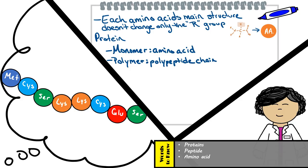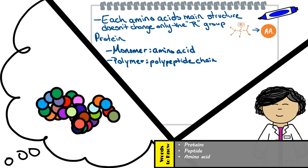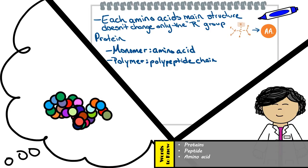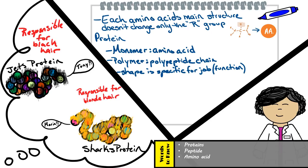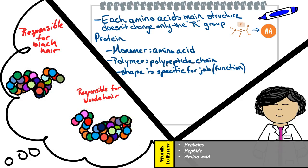How about we get back to how these long chains of amino acids make different proteins? That sequence of amino acids in the chain would make a specific protein that has a unique shape specific for it to do its job, also known as a function. For instance, this amino acid sequence could be for a protein specific for giving you your black hair. You just need to understand that the amino acid sequence gives the protein a specific shape, which is directly related to its function.